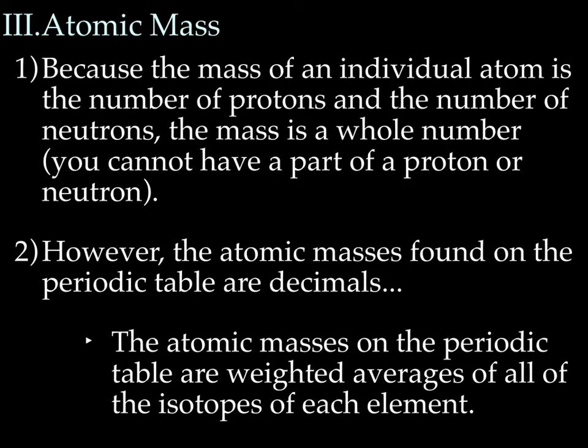Let's talk about atomic mass. Because the mass of an individual atom is the number of protons plus the number of neutrons, the mass must be a whole number, right? You cannot have part of a proton or part of a neutron. Being that a neutron weighs 1 AMU, if you have 1 neutron, 1 proton, you're going to have an atom with a mass of 2 AMU. You can't have 1 proton and a half a neutron. It's just not possible. However, as we noted the other day, the atomic masses on the periodic table are mostly in decimals, which would suggest that there's part of a neutron, but that isn't true.